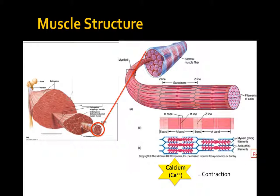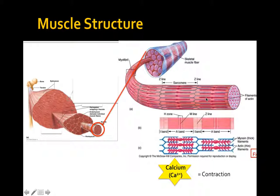The muscle fiber itself is further dissected into distinct sections. Each muscle fiber, or myofibril, contains sections called sarcomeres. Within each sarcomere you have myosin—the thick filaments—and actin—the thin filaments. It is the myosin that pulls the actin together toward the M-line, the midpoint, causing a muscle contraction all the way down the length of the muscle.